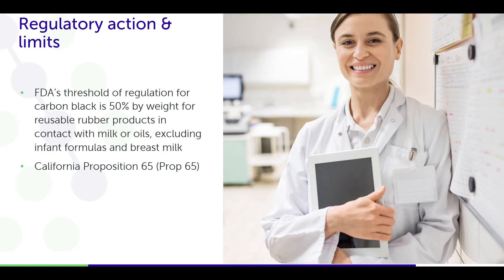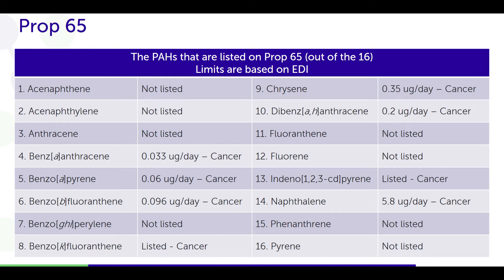The FDA threshold regulation for carbon black is 50% by weight for reusable products in contact with food, because of the potential of leaching out significant amounts of PAHs. California Prop 65 requires a black box label on anything carcinogenic. Looking at the PAHs listed on Prop 65, some like benz-alpha-anthracene are 33 nanograms per day as a carcinogen, and benz-alpha-pyrene is 60 nanograms per day. These are extremely low levels, and these have known cancer slope factors you must use in any toxicology calculation for things that come out of rubber stoppers, for example.